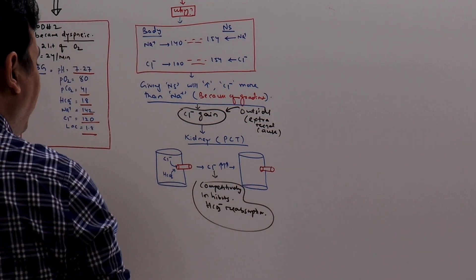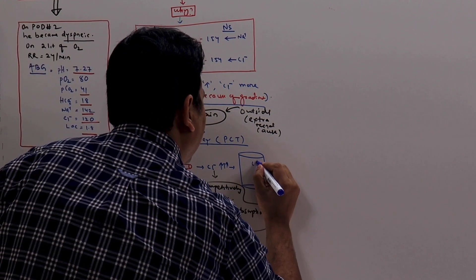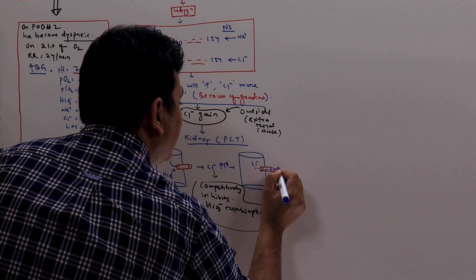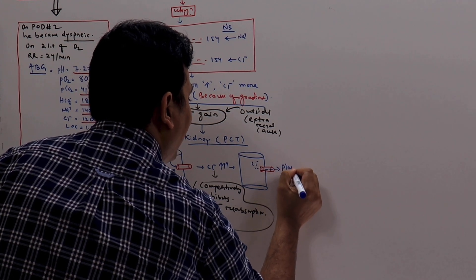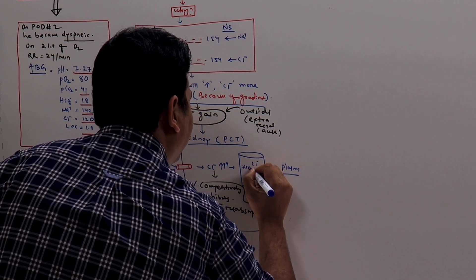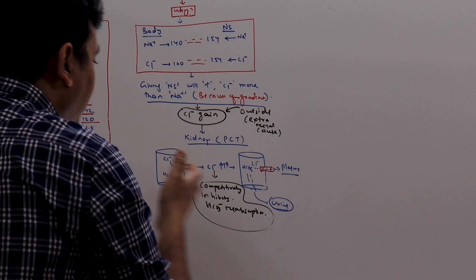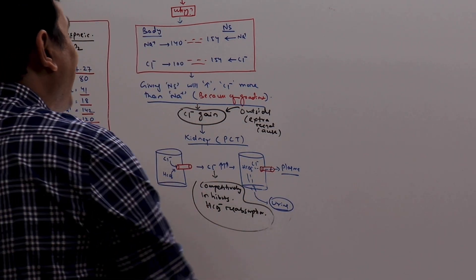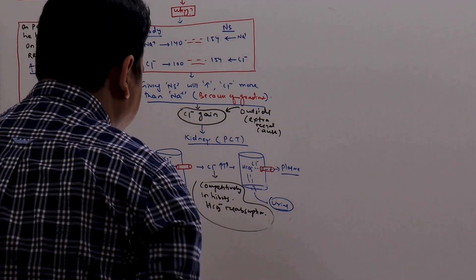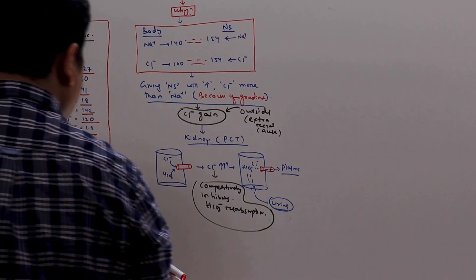What happens then? Chloride preferentially gets reabsorbed into the plasma whereas the bicarbonate gets wasted via the urine. If the bicarbonate gets wasted and chloride gets reabsorbed, why there is acidosis? This question may come.